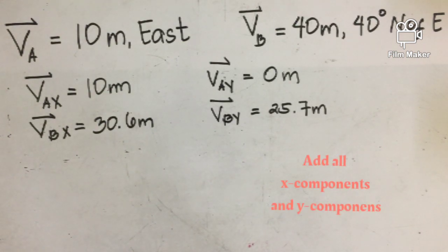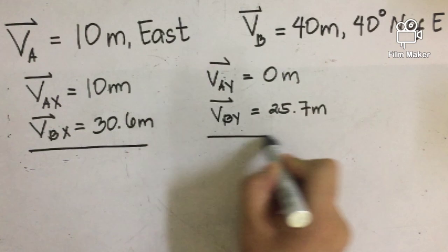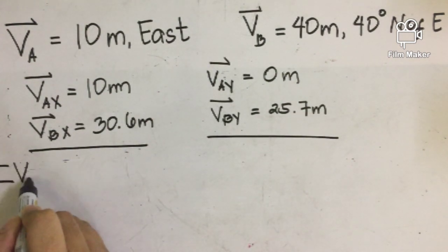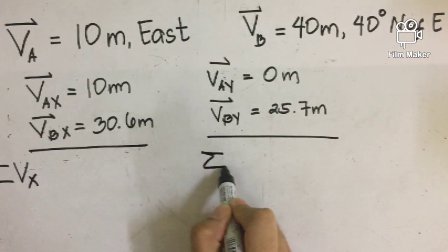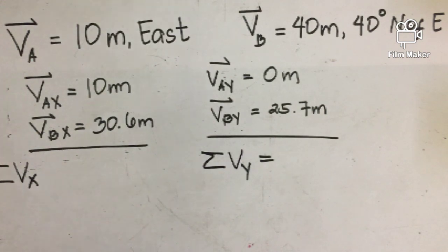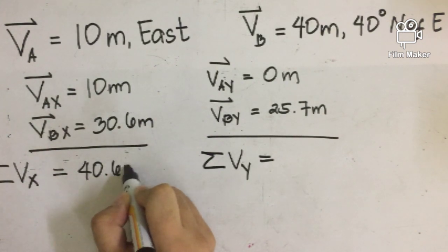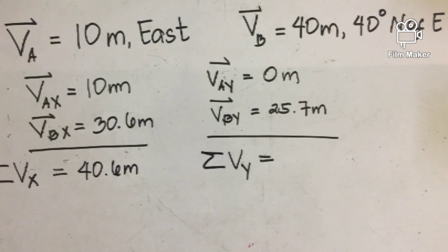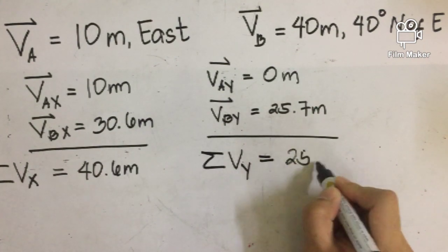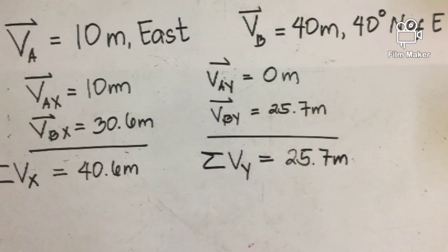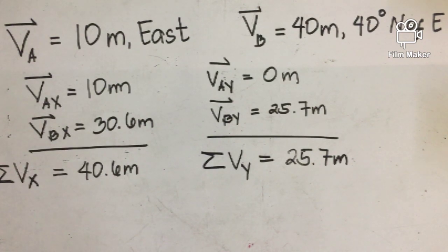The next thing we're going to do is add all x components and all y components. To find the sum, we simply add them all together. Adding 10 plus 30.6 equals 40.6 meters — do not forget to add the units, meters plus meters is meters. For the y component, 0 plus 25.7 is equal to 25.7 meters. We now have the sum of all x and y components.